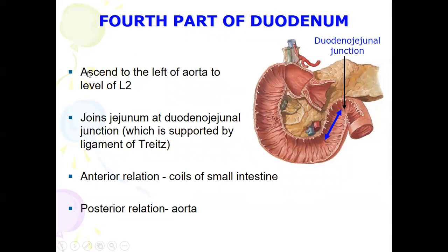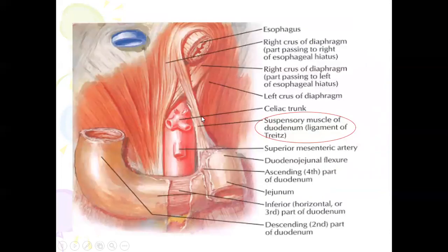The fourth part of the duodenum ascends to the left of the aorta to the level of L2. It joins the jejunum at the duodenojejunal junction, which is supported by a ligament known as the ligament of Treitz — the suspensory muscle of the duodenum. Anteriorly we have the coils of small intestine, and posteriorly the aorta.